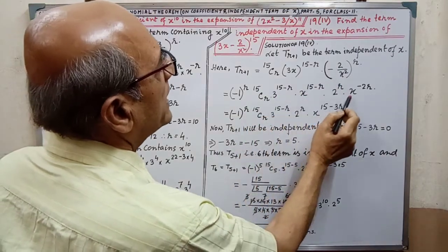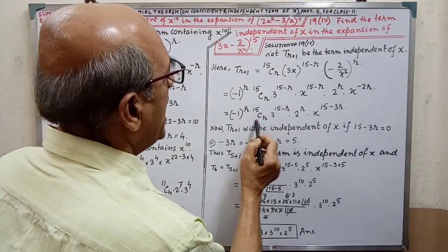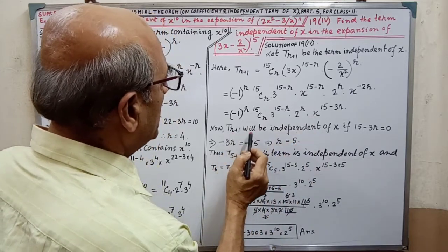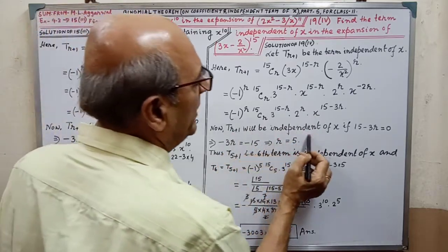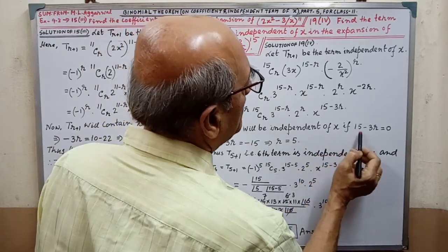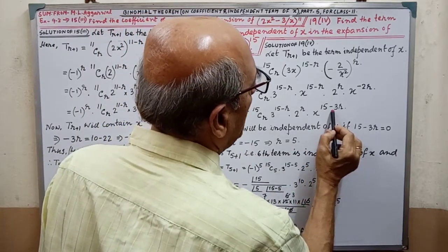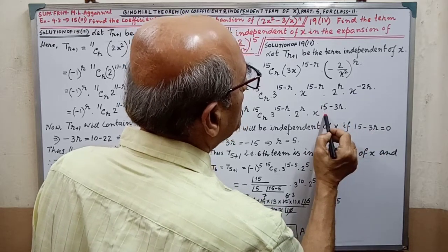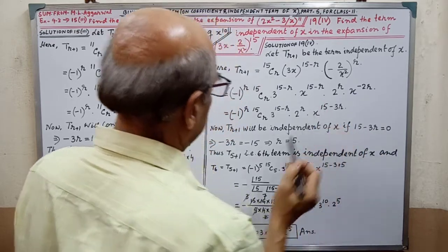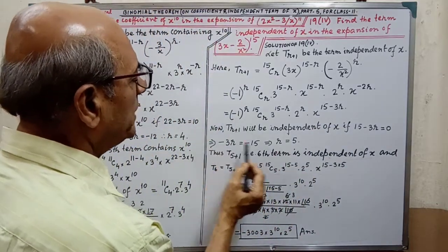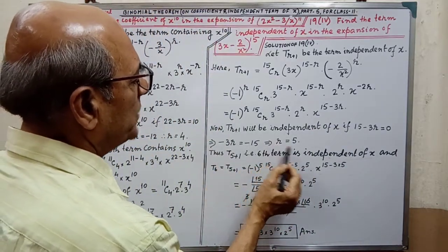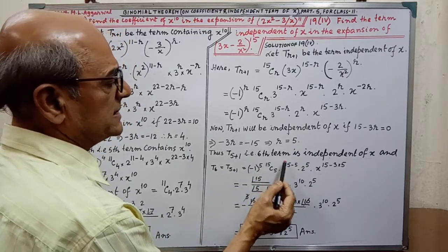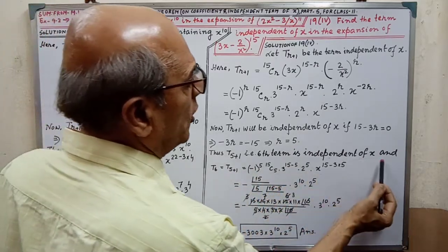Simplifying, we are getting this expression. We have to simplify more. Finally, T(R+1) will be independent of x if 15 minus 3R equal to 0 — if the power is 0, then it will be independent of x. By solving, we are getting R equal to 5. Thus, T(5+1), that is the 6th term, is independent of x.